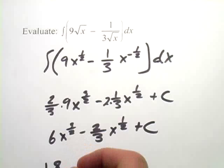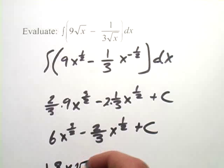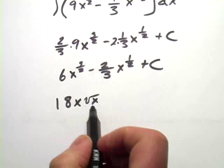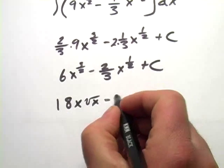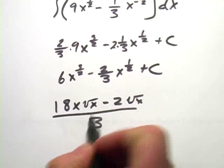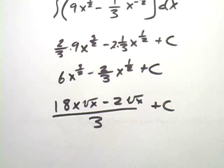So I think I'm going to do that. This would be 18, and x to the 3 halves would be an x and a square root of x. So I'm going to write that as 18x times the square root of x. Now we have minus 2 times the square root of x, and that's all over 3, and then plus our constant.